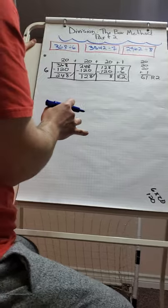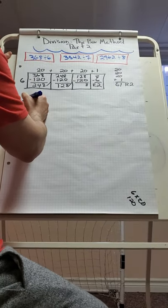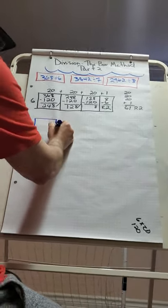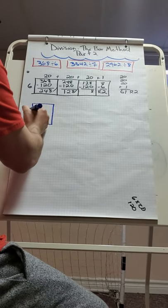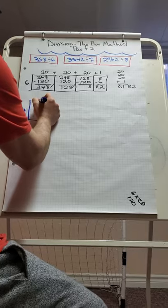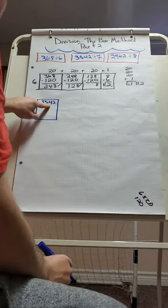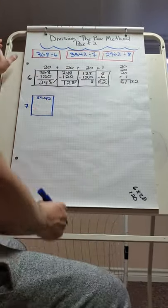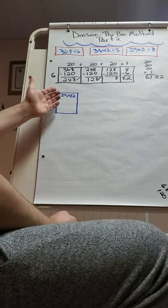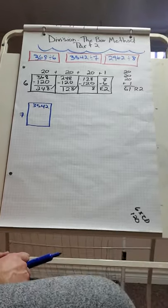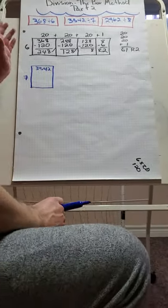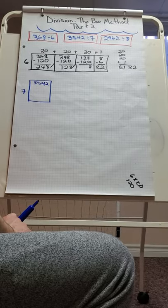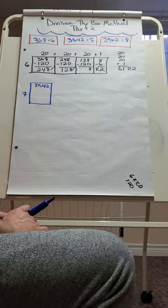Now the next one gets a little more challenging. It's 3542 divided by 7. I start my box: 7 is my divisor, 3542 is my dividend, and the answer on the other side is called the quotient. I need to think about what friendly number to multiply 7 by to reduce 3542. 7 times 5 is only 35 — too many boxes. 7 times 10 is 70 — still a lot of boxes.